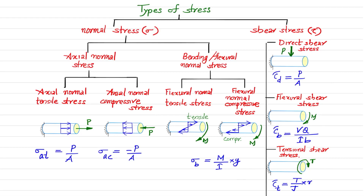Shear stress has three basic categories. Direct shear stress (tau_D = P/A) is developed under the action of a simple shear force. Flexural shear stress is shear stress developed as a result of bending — already studied in mechanics of solids but not required much for fundamental design. Torsional shear stress is the shear stress produced as a result of twisting moment or torque, found using the expression tau_t = (T/J) × r. This is the basic classification of stress needed for understanding the coming topics in machine design.